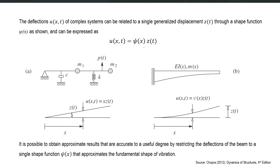The basic idea is that the deflections u(x, t) of complex systems can be related to a single generalized displacement z(t) through a shape function ξ(x), so that u(x, t) = ξ(x) · z(t). The displacement varying in both space and time can thus be described as a product of a fixed shape function and a single generalized displacement. Let me explain this concept and apply it to all three complex structures.